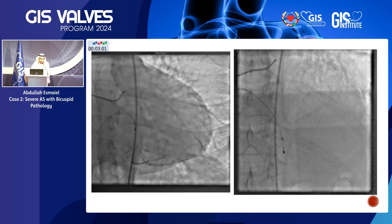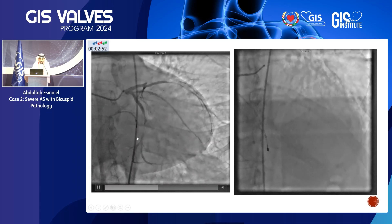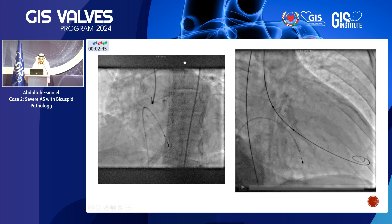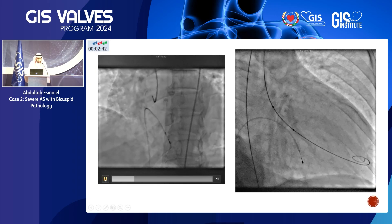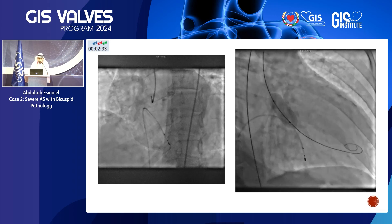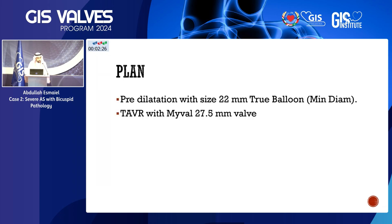On angiography, the LAD was a CTO filled by the right coronary, the circumflex was severely diseased, and the RCA was also severely diseased and filling the LAD system. We performed balloon aortic valvuloplasty to temporize while a final decision on surgery versus TAVR and PCI was made. After the valvuloplasty, the patient had some improvement in hemodynamics with less pressors, but was still not suitable for surgery. We decided to proceed with TAVI a couple of weeks later.